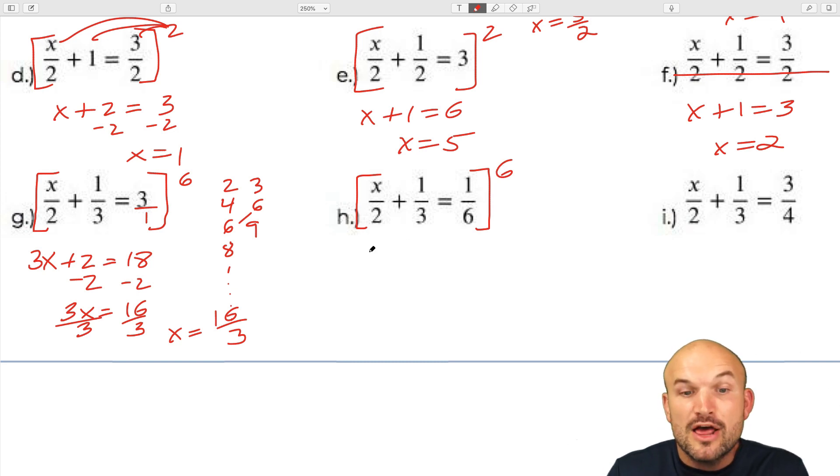How many times does 2 divide into 6? 3 times. So that's 3 times x. How many times does 3 divide into 6? That's going to be 2. 2 times 1 is 2. And 6 divides into 6 1 time. So that's going to equal 1. Then here, I can just subtract the 2 on both sides. 3x is equal to negative 1. Divide by 3. And therefore, x equals negative 1 third.